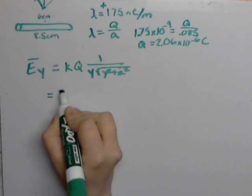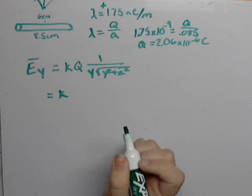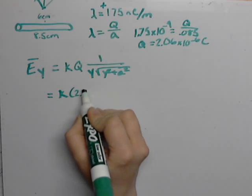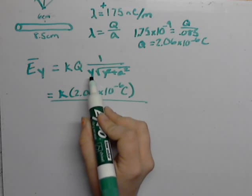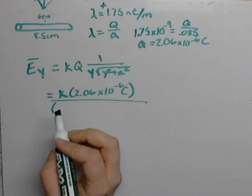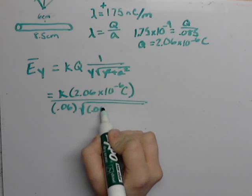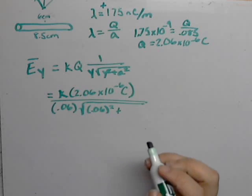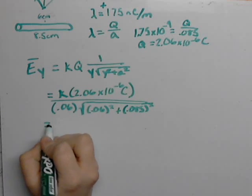So let's go ahead and plug everything in. We have our constant k, which I'm not going to write it out, it's 8.99 or 8.988 times 10 to the 9th newtons times meters squared divided by coulomb squared. Our Q is what we calculated, 2.06 times 10 to the negative 6 coulombs. And then we have our y. So our y is 6 centimeters, but we need it in meters, so it's 0.06 meters. And then we're going to times that by the square root of 0.06 meters squared plus our a. Our a is the total length of the wire, and that's in centimeters as well, so we need to convert it again to 0.085 squared.